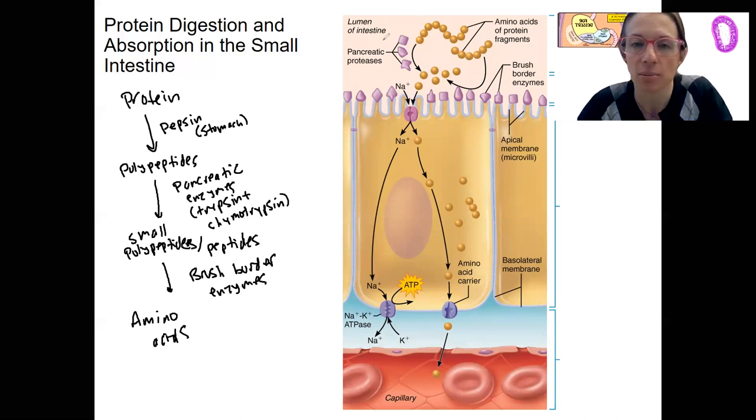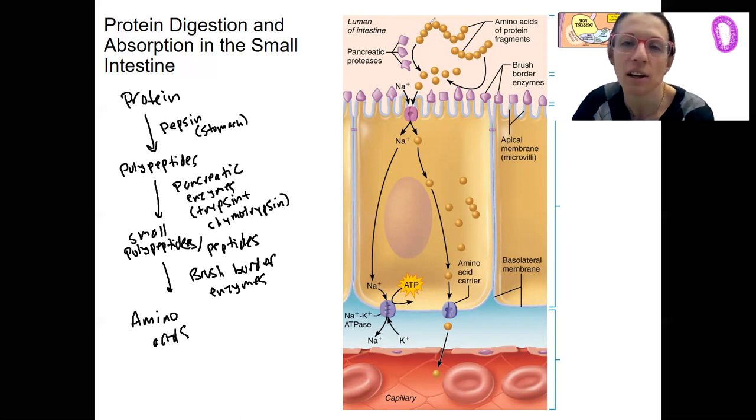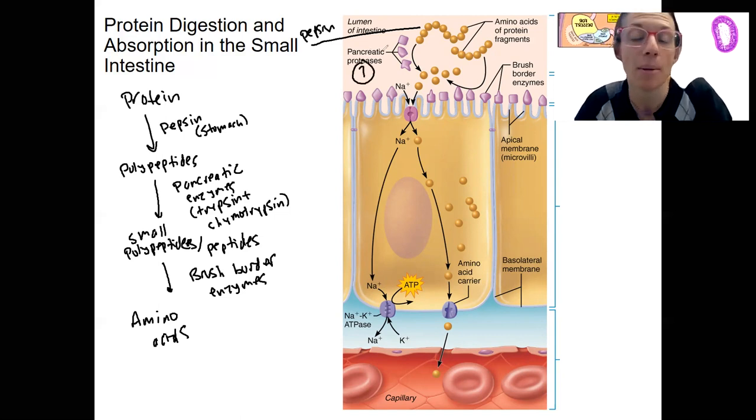Look, amino acids broken down by pancreatic proteases. I'm going to add in here, because we're in the intestine. In reality, some might have occurred in the stomach as well, right? But if we're in the intestine now, this is step one in the intestine - pancreatic proteases, followed by brush border enzymes to get to our amino acid.